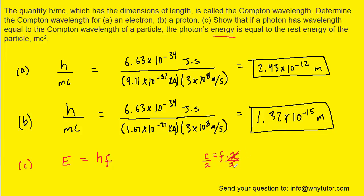So frequency is equal to the speed of light divided by the wavelength. Let's substitute the C divided by wavelength in here for the frequency. So we're going to have h multiplied by C over lambda.